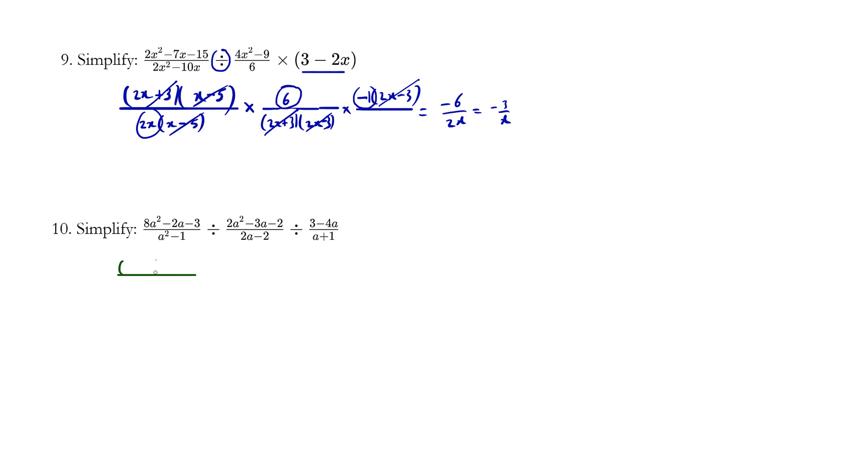We see a trinomial here, and we try to factor it. So we factor this trinomial, and we factor this by difference of squares. And we change this division to multiplication by flipping the denominator to the top. And we're going to factor out the two.